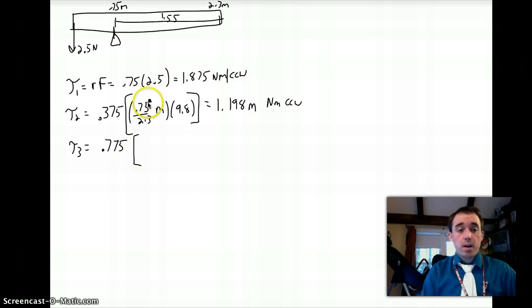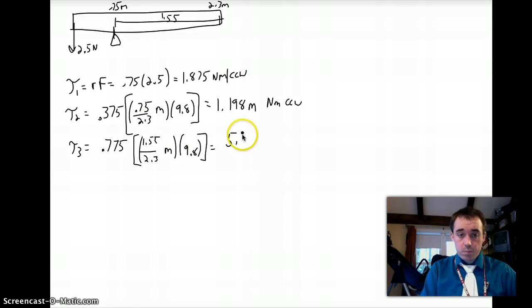My force comes about from the leftover distance on that side, which is 1.55, over the total distance, 2.3 M, again times 9.8. And that's going to give me 0.775 times 1.55 over 2.3 times 9.8, which is going to give 5.118. I'll just do two. That variable still stays, newton meters, but this one is clockwise because it's on the right side.